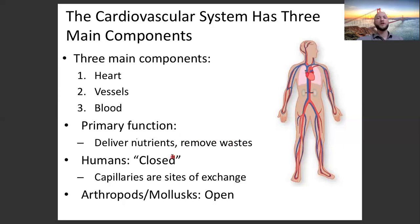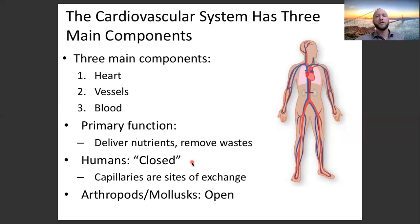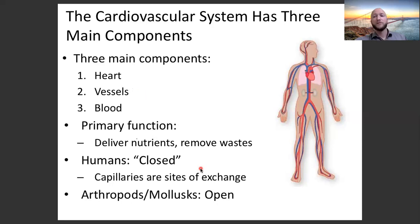Humans are considered to be a closed circulatory system. The only place where nutrients are able to leave our circulatory system, and waste products are able to enter, are the capillaries. Capillaries are the most narrow, the tiniest of our different vessels. Things are not able to move in and out at our aorta. Within the heart chambers, nutrients are not able to move in and out — except in the capillaries within the walls of the heart.